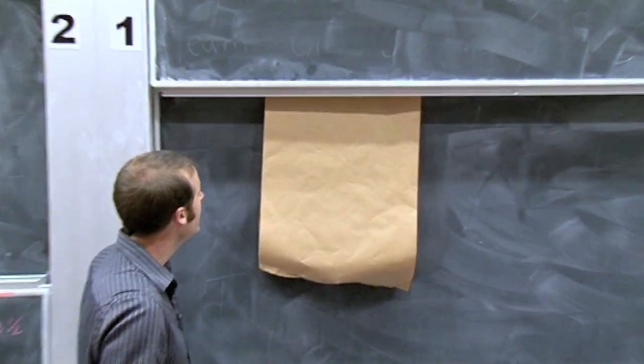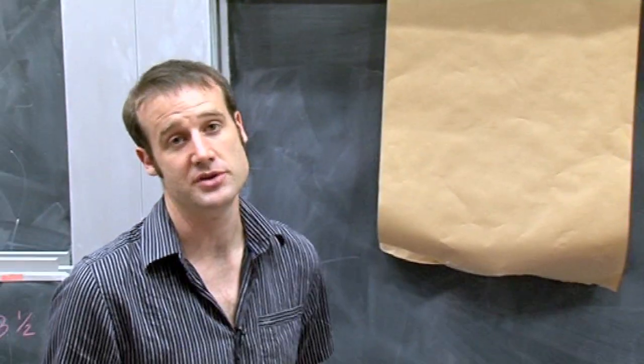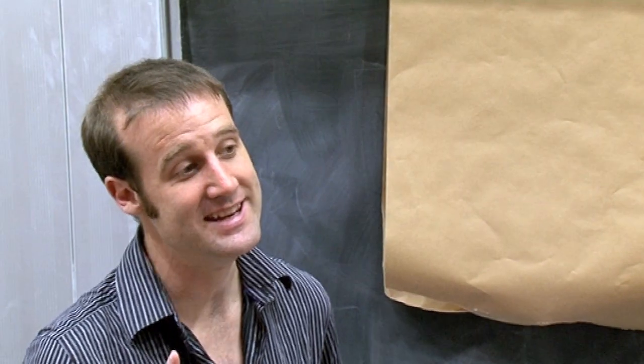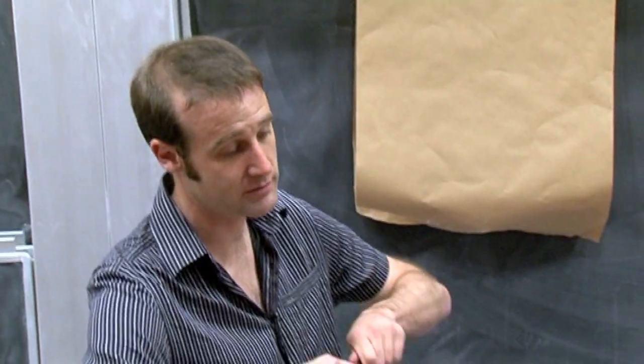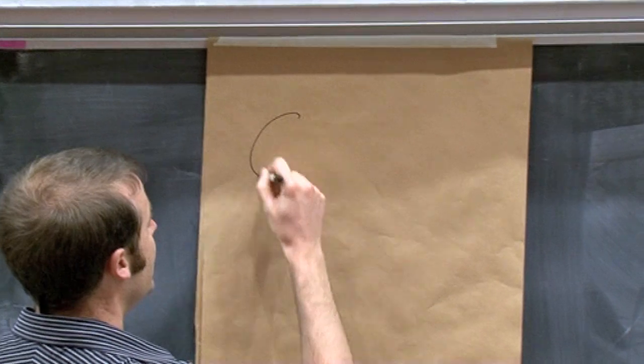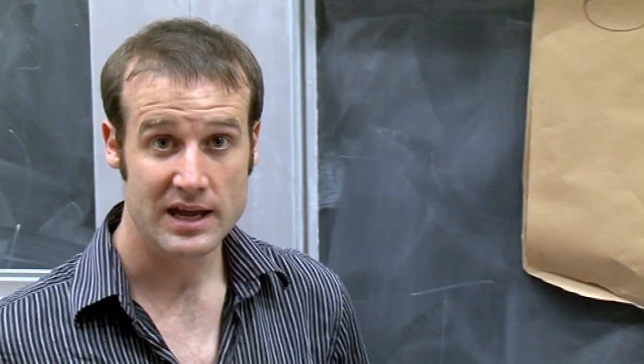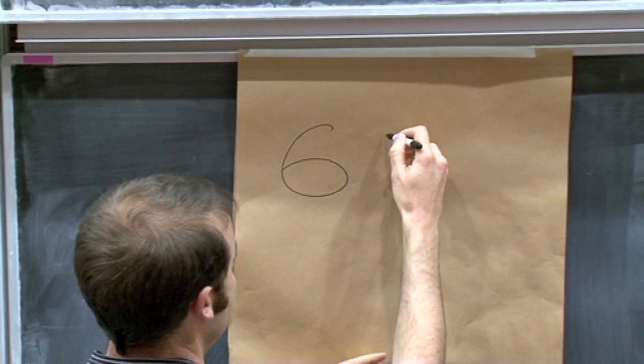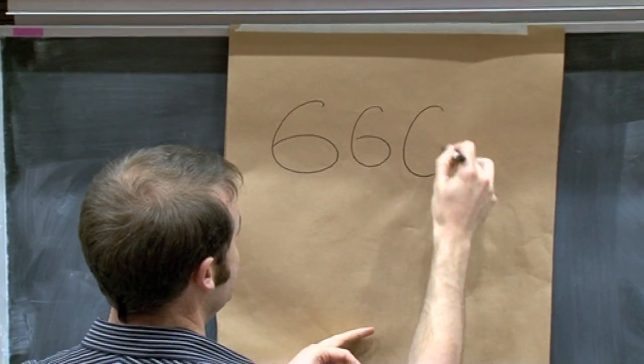Excellent, some brown paper. Okay, so for this number trick, what you do is you take any one digit number. So for example, Brady, what one digit would you like? Six, lovely number six. So you write down the number six, that's the digit you picked, and then you write it down two more times to get a three digit number. So in this case, 666.